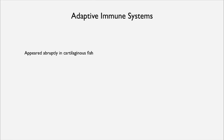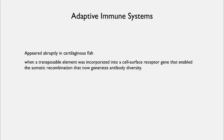Looking back evolutionarily, the adaptive immune system appeared abruptly in cartilaginous fish — think 350 to 400 million years ago. What happened? A transposable element — a jumping gene evolutionarily related to an RNA virus — was incorporated into a cell surface receptor gene, and that enabled somatic recombination, which is the mechanism that now generates antibody diversity. In fact, we owe our adaptive immune response to an event whereby a relative of a virus was incorporated into our own nuclear genome.